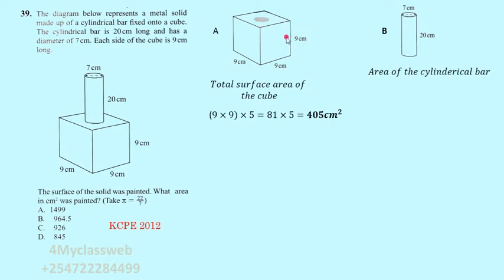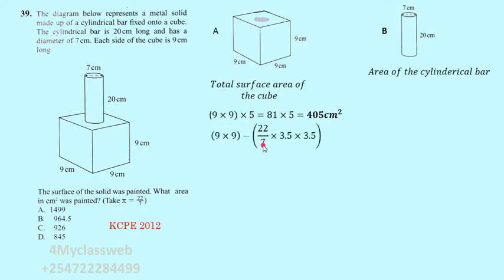For the top square, the area is nine by nine, but we must subtract the area of the circular part. That is why we use 22 over 7 as pi. This circle has a diameter of seven centimeters, so the radius is seven divided by two, which is 3.5 centimeters. The area of the top face is therefore: 9 × 9 minus (22/7 × 3.5 × 3.5), that is 81 minus pi r squared.